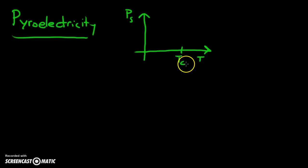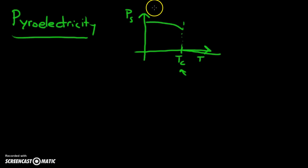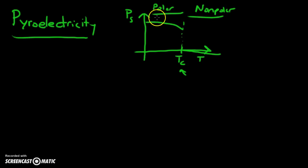A piezoelectric material beneath a certain temperature, or within a certain temperature window, is piezoelectric. Let's assume a material is piezoelectric in a region where its spontaneous polarization is finite or positive. After a certain temperature there is no spontaneous polarization, and as we get closer to the Curie temperature — the phase transition from polar to non-polar — we are decreasing the polarization.